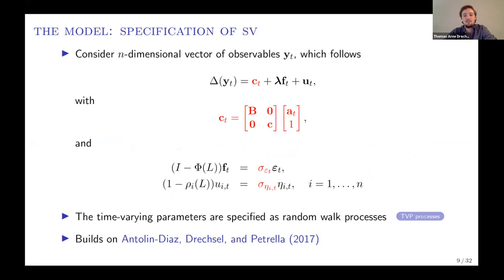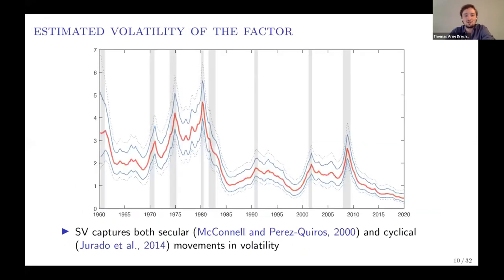We also introduce stochastic volatility, allowing both the volatility of the factor and the volatility of the idiosyncratic component to vary over time. Both the intercept and the volatilities follow random walk processes. Here I'm showing the in-sample posterior estimate of the factor volatility, which conveys familiar episodes such as the Great Moderation, or the fact that volatility increases in recessions.